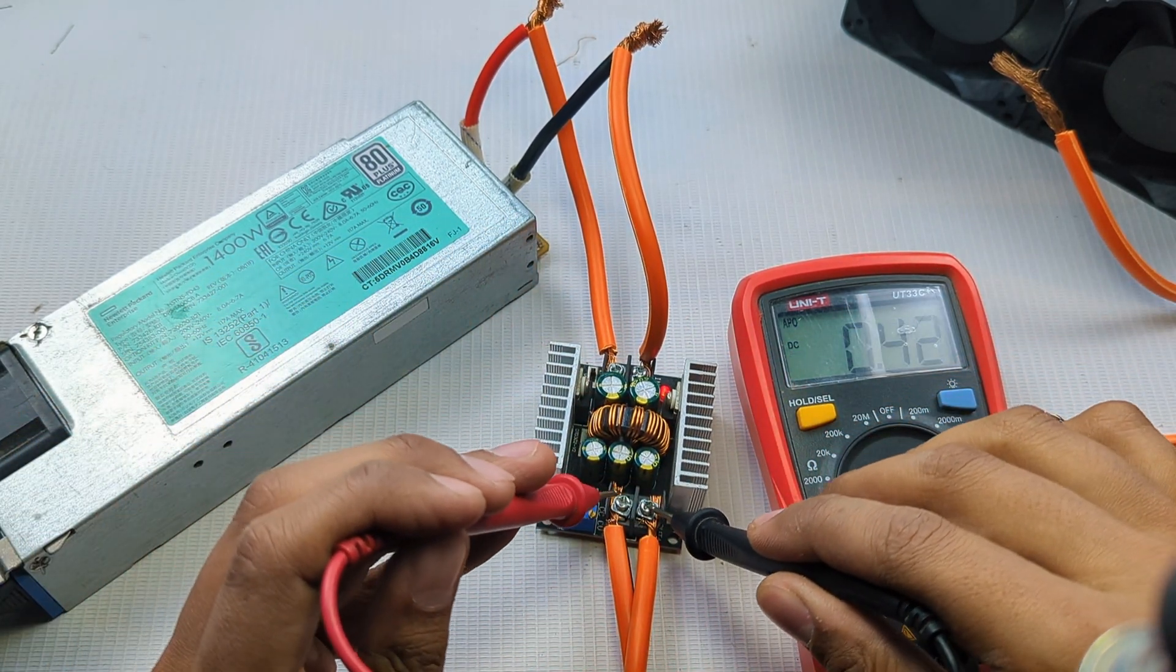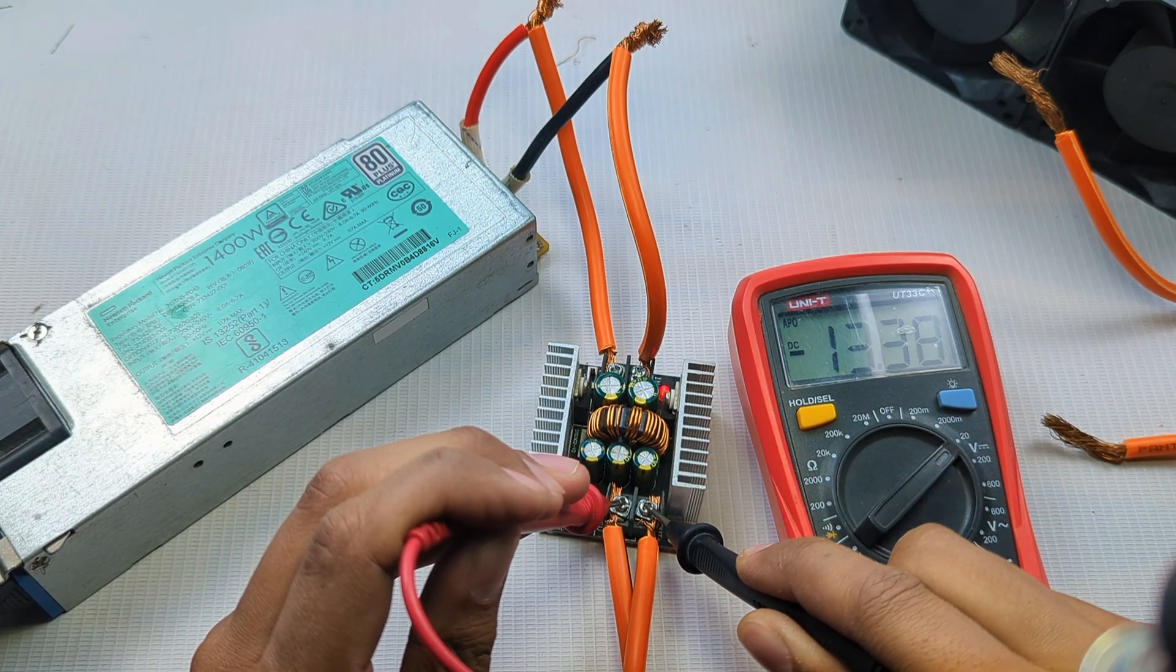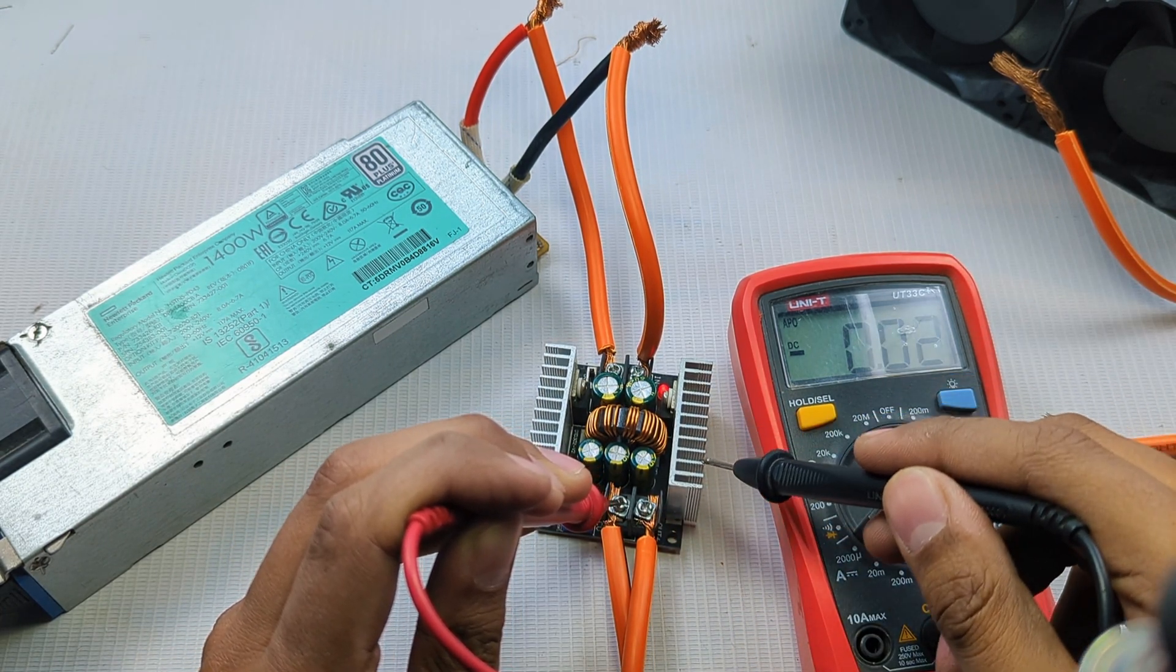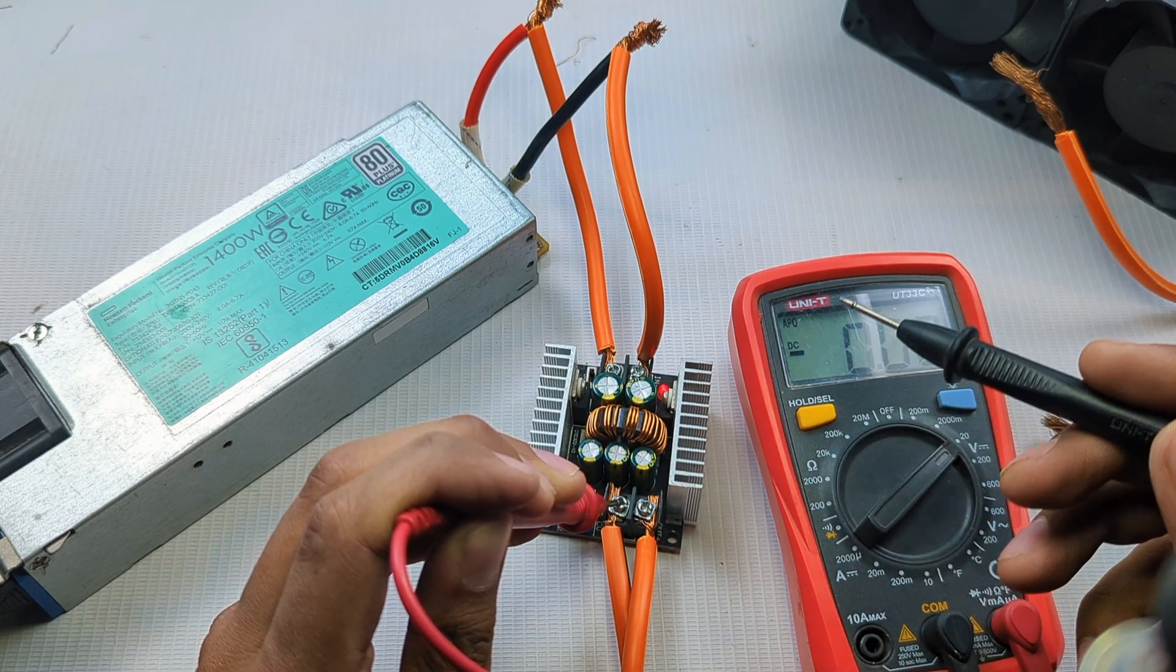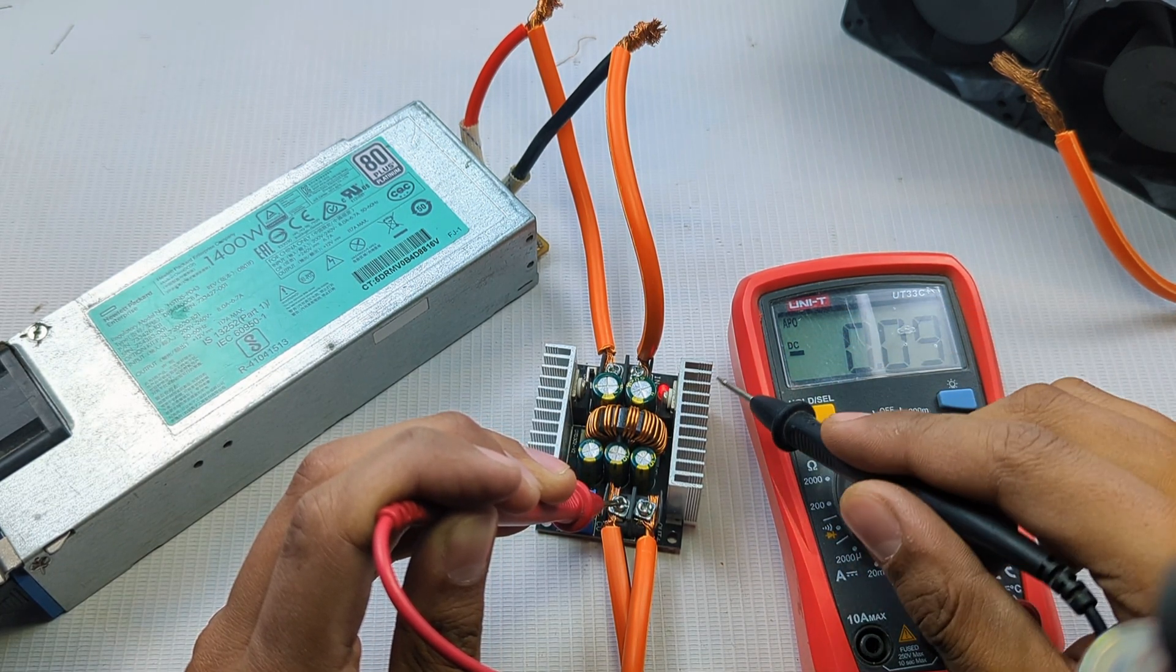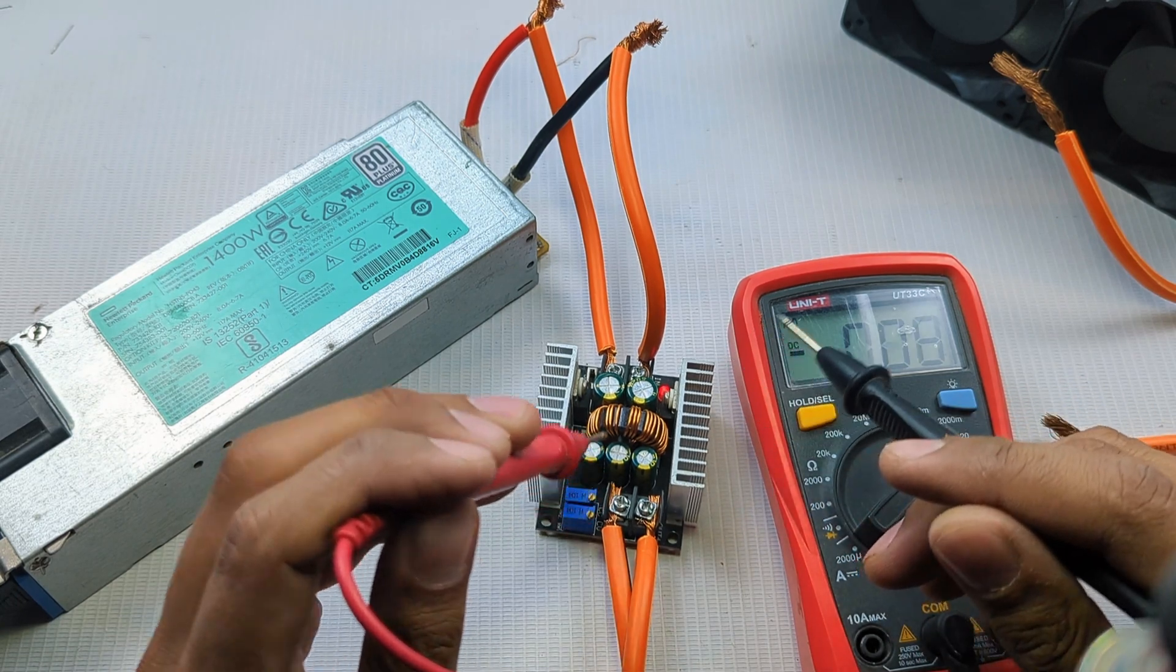Now let's measure the output voltage from the buck converter. It's giving about 13.38 volts. It's stepping down the voltage because it's a buck converter and to some extent it's increasing the output current, but maximum it can handle 20 amps.